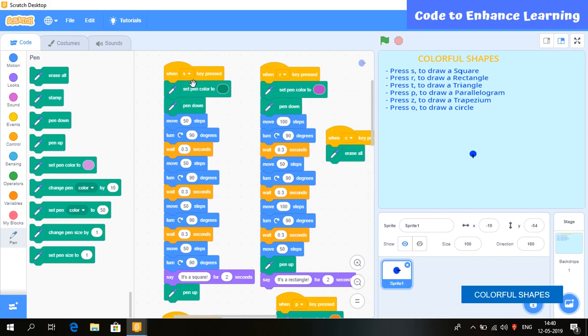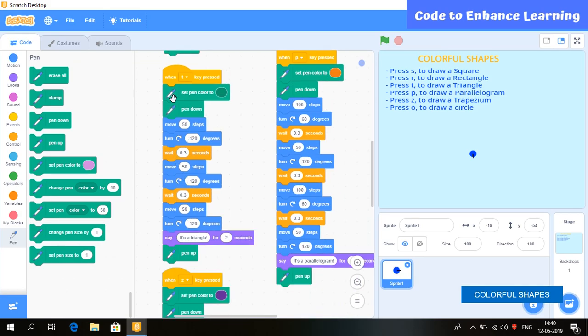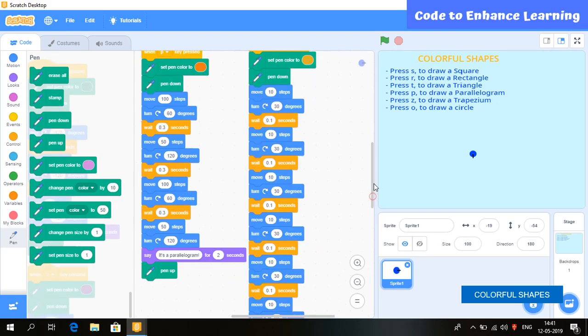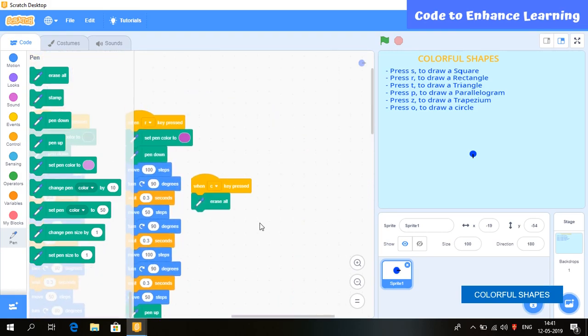As you can see, this is the code for wire. This is the code for rectangle. This is the code for triangle. This is the code for parallelogram. This is the code for trapezium. And this is the code for circle. And this code is to clear the screen.